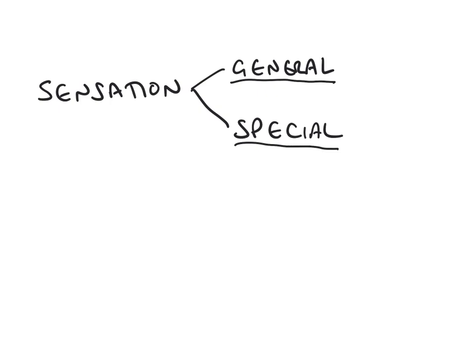General sensation can be further subdivided into somatic and visceral. Somatic sensation is characterized by being consciously perceived generally, whereas visceral sensation is generally not consciously perceived. A large part of the visceral sensory system is related to maintaining homeostasis. For example, the carotid body is a part of the visceral sensory system. But the key distinction here is that the somatic sensory system is conscious and the visceral sensory system generally is unconscious.